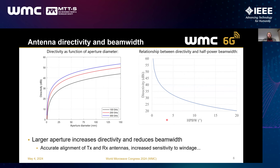When thinking about the gain or directivity properties, we have an illustration at a couple of frequencies showing how using a larger antenna aperture gives a boost in directivity — a more focused beam. At the same time, as the directivity goes up, the pattern becomes more pencil-like and the half-power beam width becomes substantially narrow.